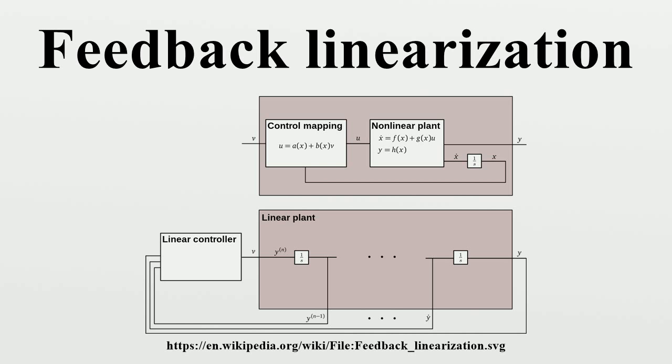Polynomial linearization by feedback. For the discussion that follows, we will assume that the relative degree of the system is r = n. In this case, after differentiating the output n times we have y⁽ⁿ⁾ = L_f^n h(x) + L_g L_f^(n-1) h(x)u, where y⁽ⁿ⁾ indicates the nth derivative of y. Because we assume the relative degree of the system is n, the Lie derivatives of the form L_g L_f^k h for all k < n-1 are zero. That is, the input has no direct contribution to any of the first n-1 derivatives.